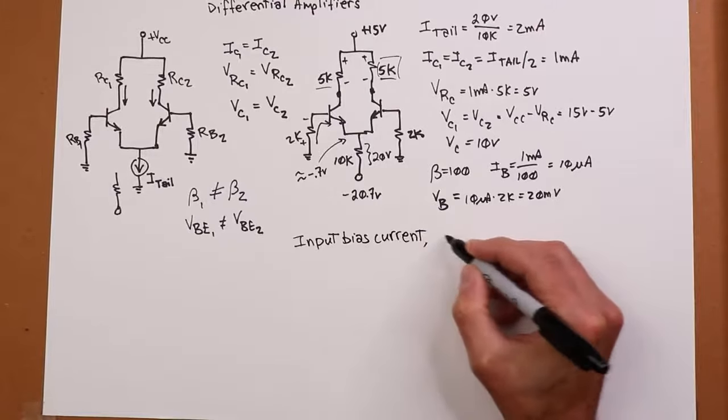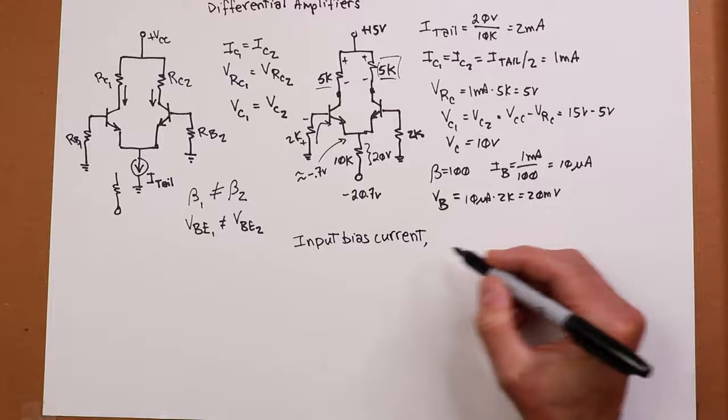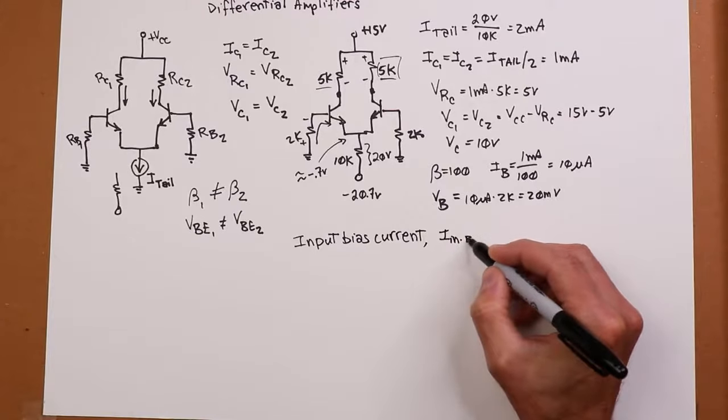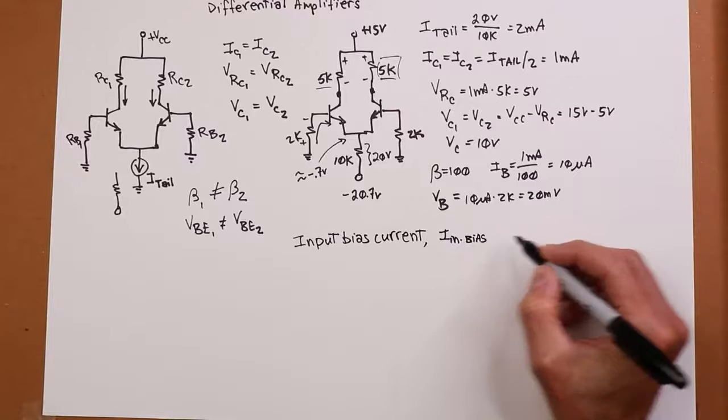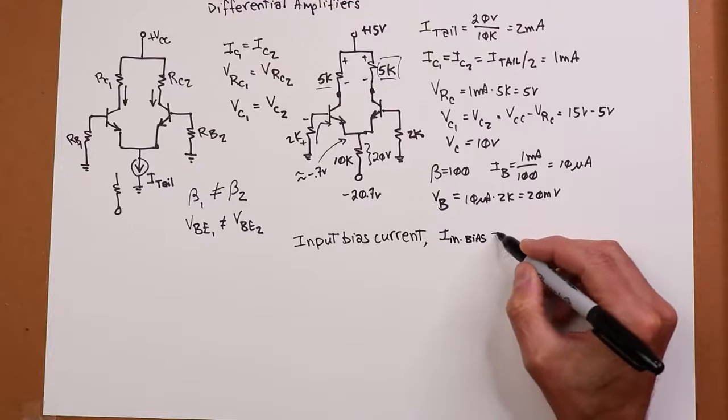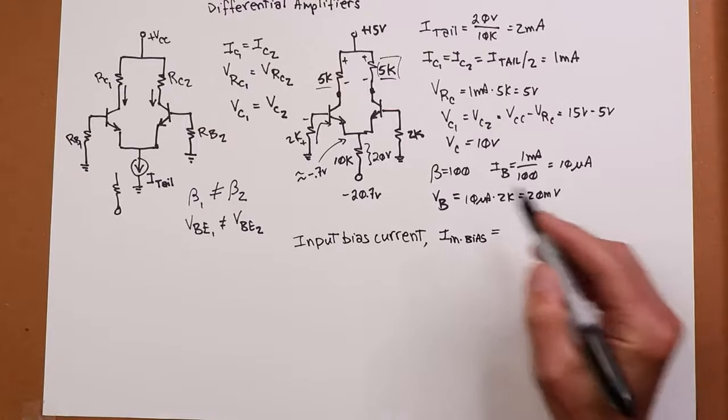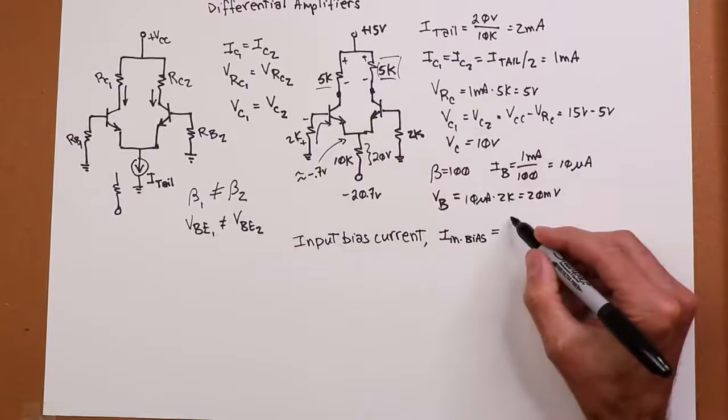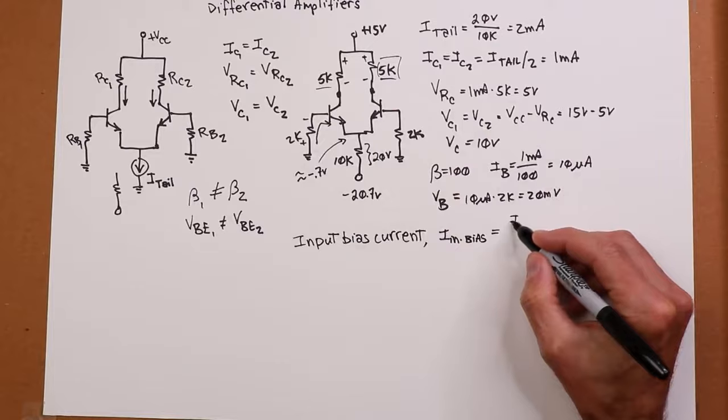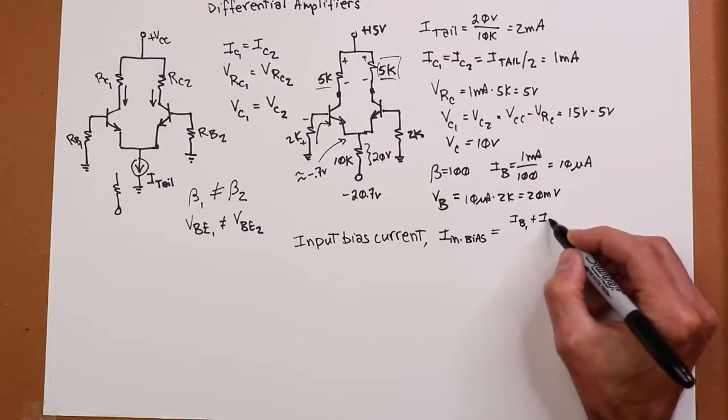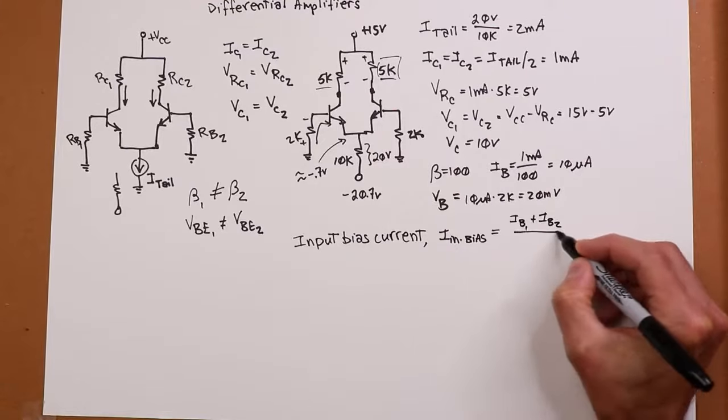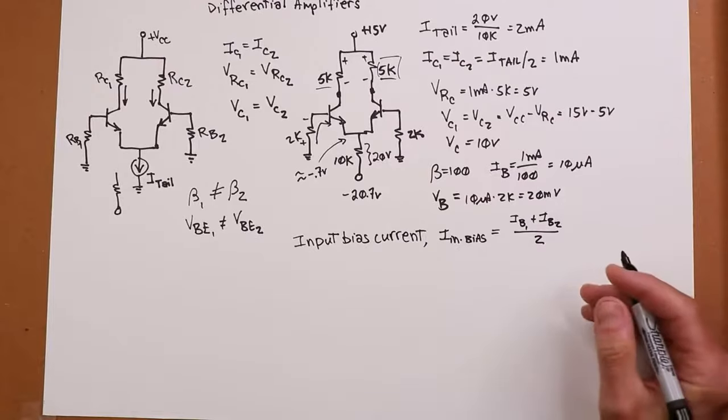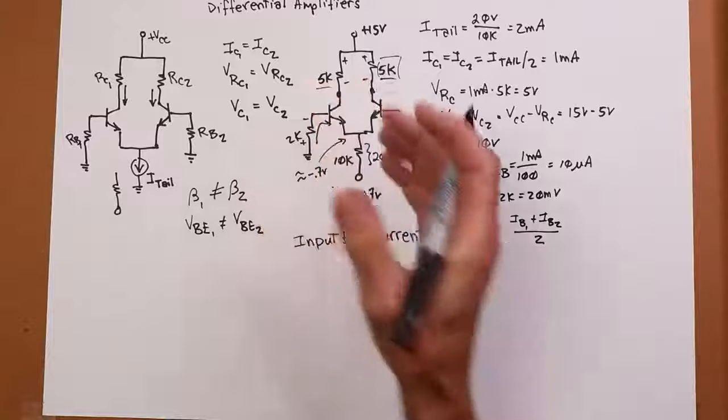Let's start with that issue with the base. I would like to know what the input bias current is. Typically, we might call that just like IN bias. There isn't a nice accepted, totally accepted name for this, but I'll just call it IN bias. Well, what's that going to be? It's essentially just the average of your two base currents. So we could just say it's IB1 plus IB2 divided by 2. That's what it averages out to be.